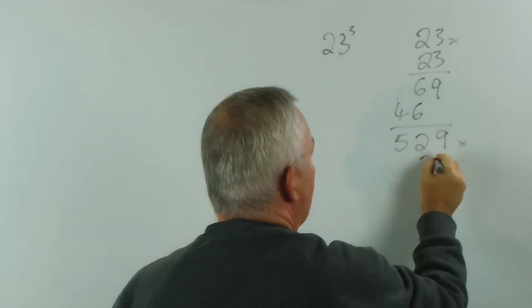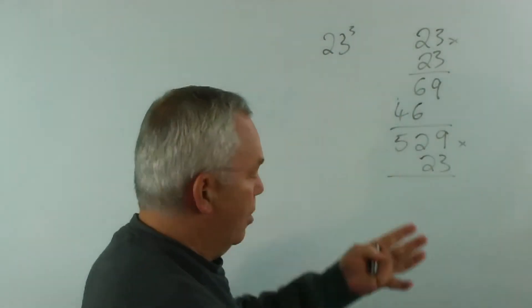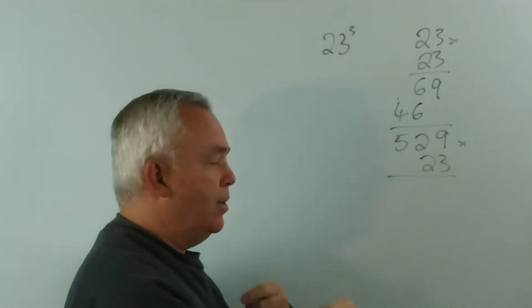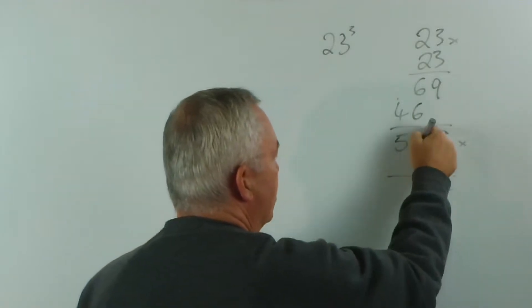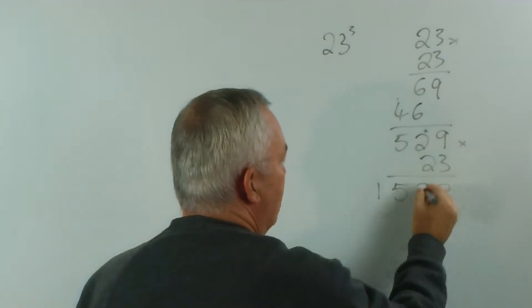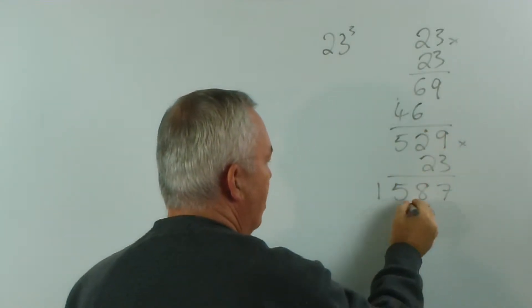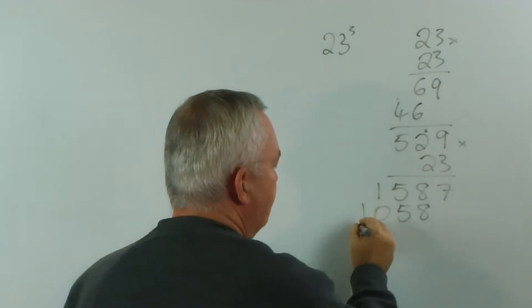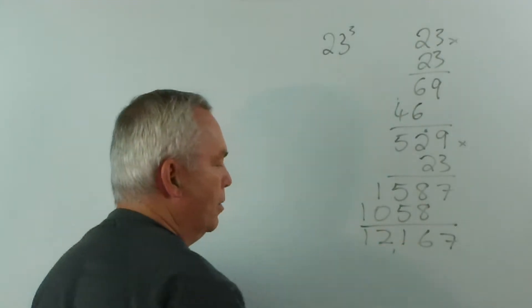Then we would multiply this result by 23 again, because 23 cubed means 23 by 23 by 23. We'd go 3 nines, 27, carry the 2. 3 times 2 is 6, and 2 is 8. 3 fives are 15. Twice 9 is 18, carry the 1. Twice 2 is 4, and 1 is 5. And twice 5 is 10. And we would get this result.